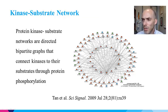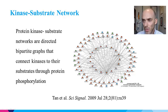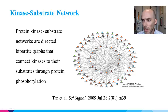One thing you can do is focus on one type of interaction — for example, protein kinase-substrate networks. These are directed bipartite graphs that connect kinases to their substrates through protein phosphorylation. These networks are useful when analyzing data from phosphoproteomics to link detected changes in phosphopeptide levels with the kinase cascades responsible for those observed changes, and we will discuss this further along in the course.